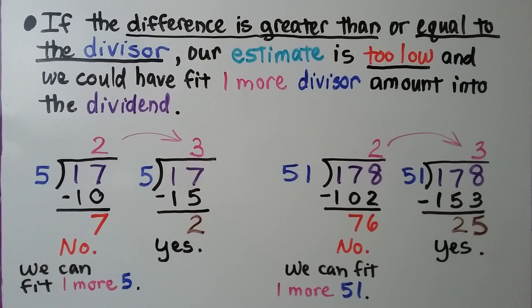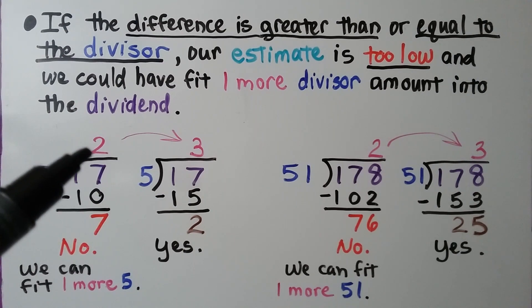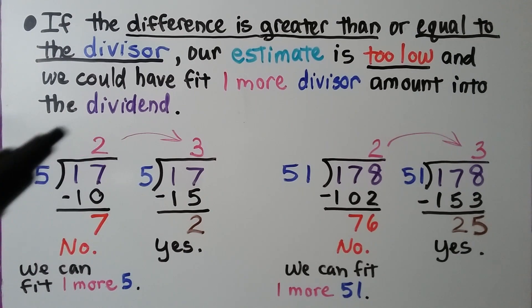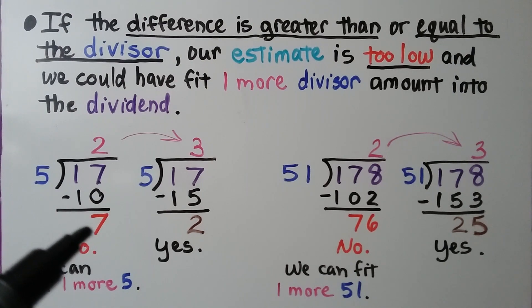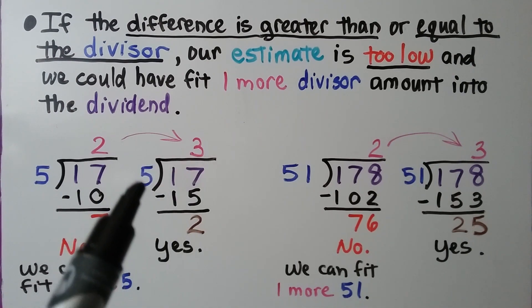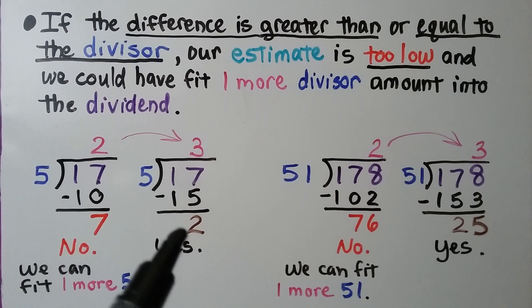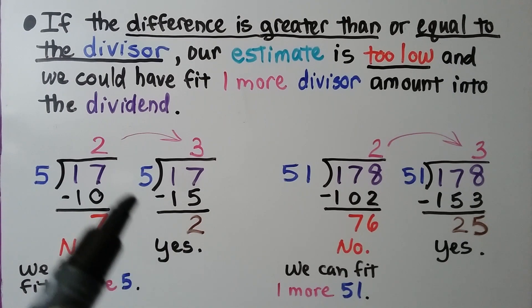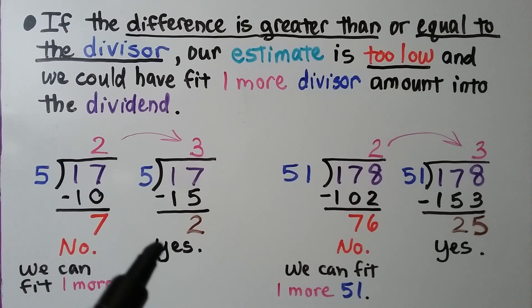If the difference is greater than or equal to the divisor, our estimate is too low, meaning we could have fit one more divisor amount into the dividend. Using easy numbers: 17 divided by 5 — if we put a 2, then 5 times 2 is 10, and we subtract to get 7, meaning another 5 could fit. So we adjust to a 3: 5 times 3 is 15, we subtract and get 2. This 2 is less than divisor 5, so that works — 3 remainder 2.